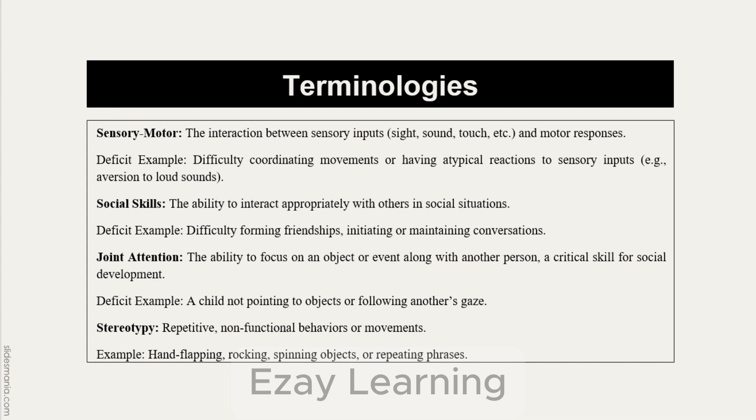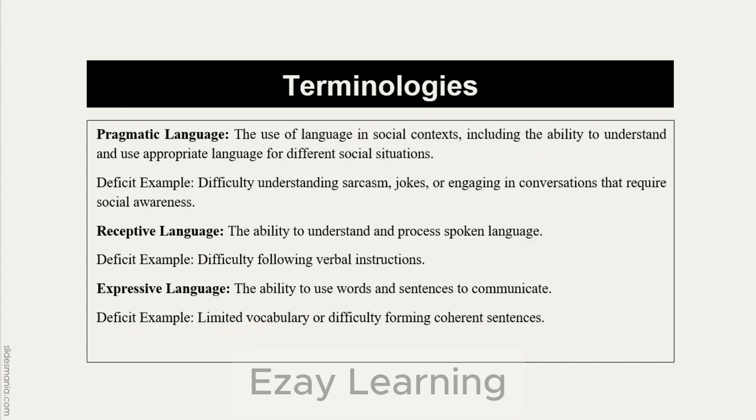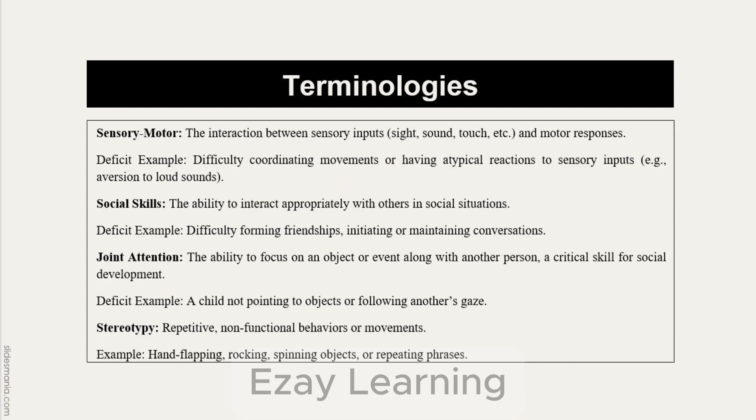So we covered seven terms: pragmatic means social; receptive means receiving; expressive means using words or sentences to express; sensory motor refers to sensory inputs and motor responses; social skills are related to social situations; joint attention means giving attention together to something; and stereotypy refers to repetitive, continuous movements.